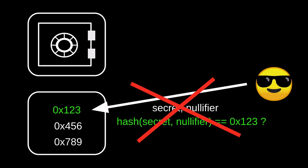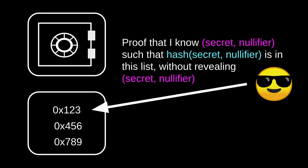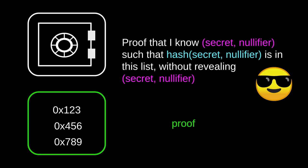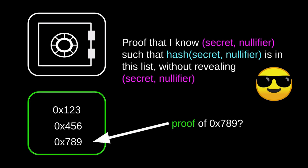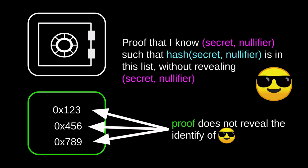So how can we fix this problem? We know that revealing the secret and the nullifier reveals the identity of the withdrawer. If somehow there is a way to prove that I know a secret and a nullifier such that the hash of the secret and the nullifier is recorded onto the Tornado Cash smart contract, without revealing the actual secret and the nullifier — the anonymous user will send a proof saying: I know a secret and a nullifier such that the hash is recorded onto the Tornado Cash smart contract, and this proof does not reveal the actual secret and the nullifier. This means that the anonymous user will stay anonymous. The smart contract verifies that the proof is valid, but it wouldn't know if the proof is for 0x123, 0x456, or 0x789. In other words, the proof does not reveal the identity of the anonymous user.